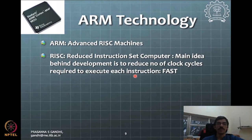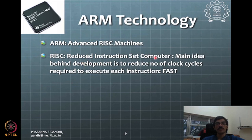Clock frequency determines how fast execution will happen. If you have, say, an 80 megahertz clock and you are taking 15 clock cycles to execute some command, you can find out the time taken to execute that command. As compared to normal microcontrollers where ARM technology is not present, commands designed in ARM technology will have a reduced number of clock cycles to execute. That is why this technology can do really fast execution of your hardware programs.